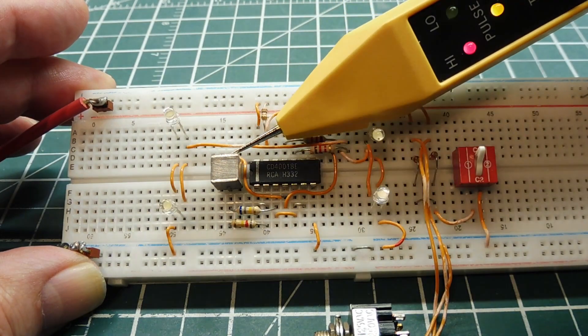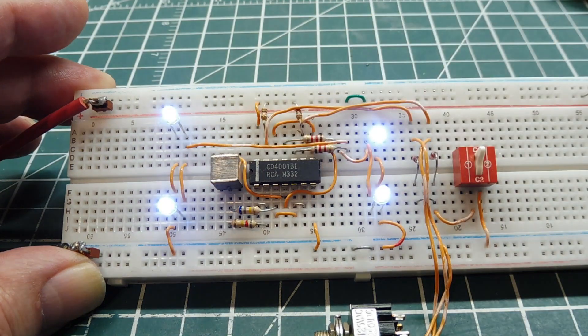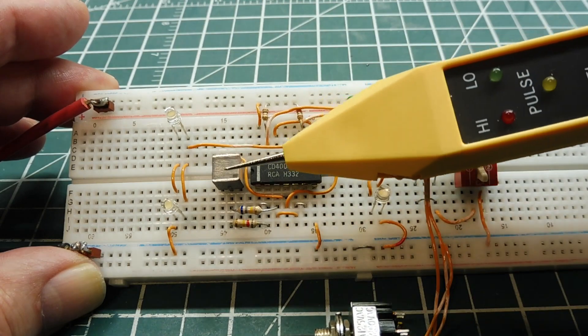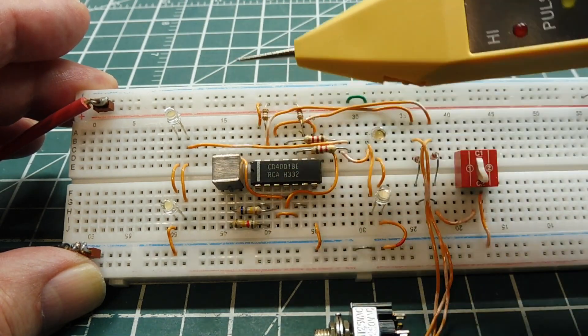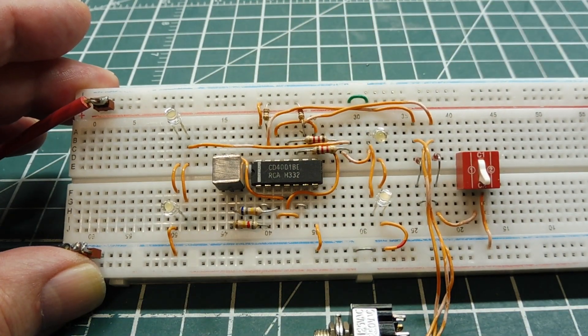The capacitor that's used in the RC oscillator, this capacitor here, has to be a non-polarized capacitor because when it's switching, current is flowing either way. So we need a non-polarized capacitor.